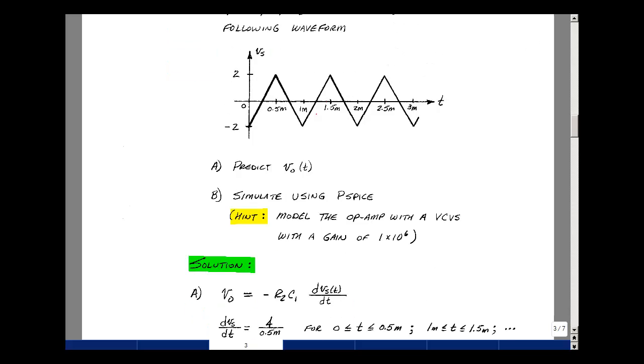We have that Vout is equal to minus R2 C1 dVs dt. So what's the derivative of this curve? Well, it's a constant. There are two values, this value here and then this value. Slope is the rise over the run. So I have a rise of 4 volt, run of 0.5 milliseconds.